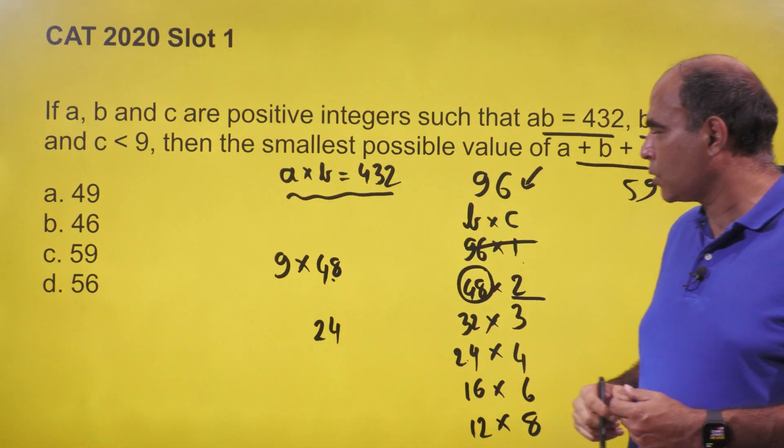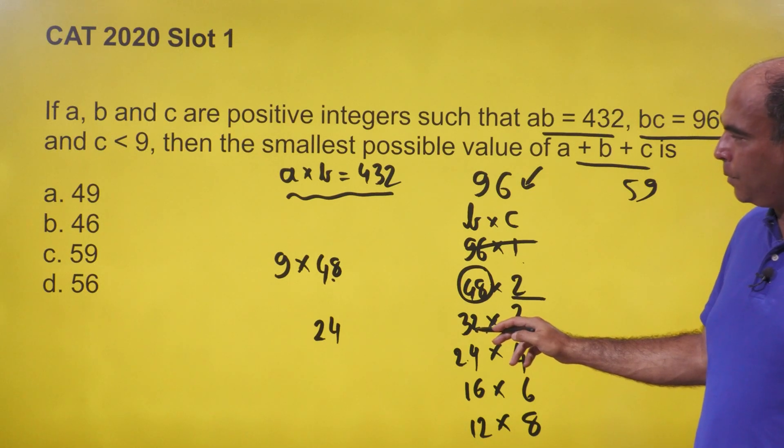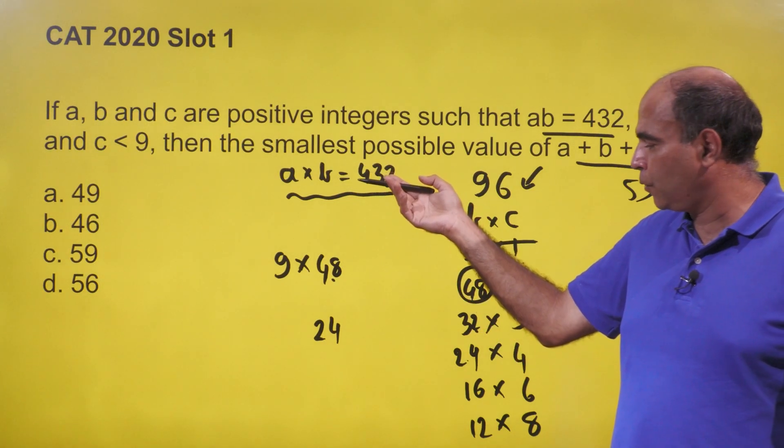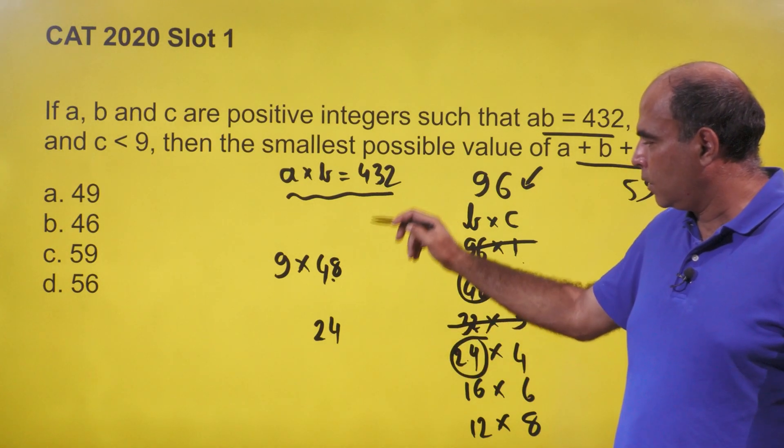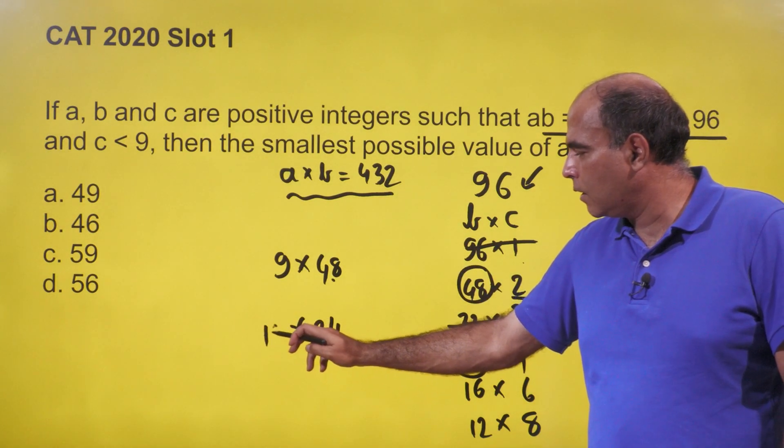If we try b = 32, it's not a factor of 432, so this case is eliminated. If we try b = 24, then a = 432/24 = 18.